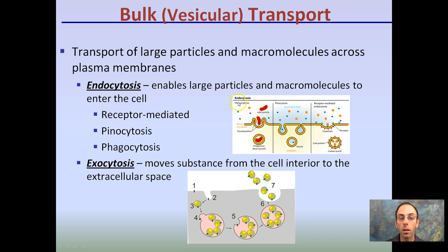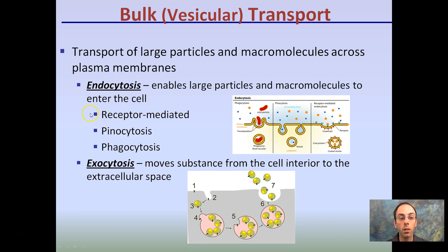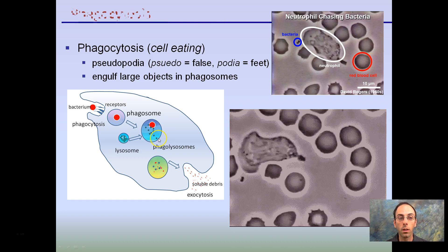Endocytosis has three different types and exocytosis has one major type. The three types of endocytosis are receptor-mediated endocytosis, pinocytosis, and phagocytosis.